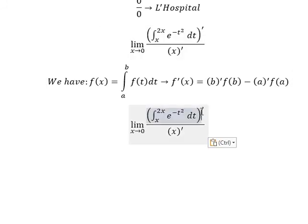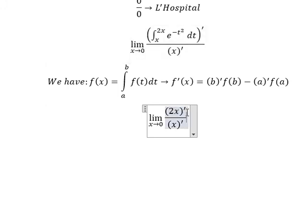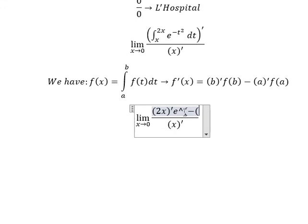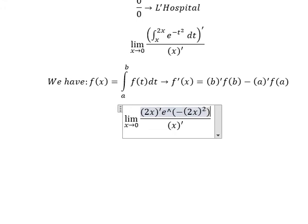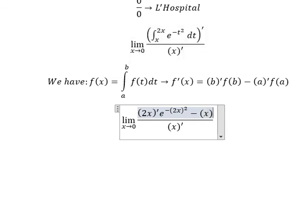So for this one, we will have the first derivative of 2s, and the value of 2s will change for t, minus we do the first derivative of s, and the value of s will change for t.